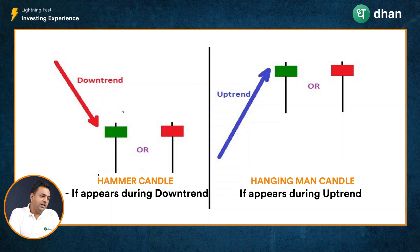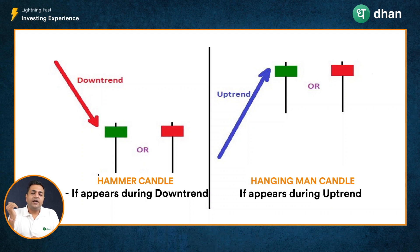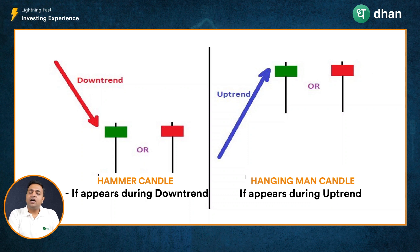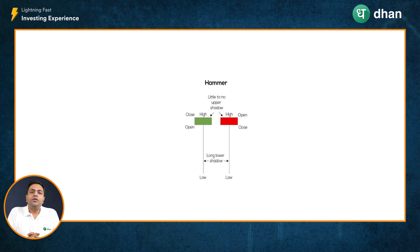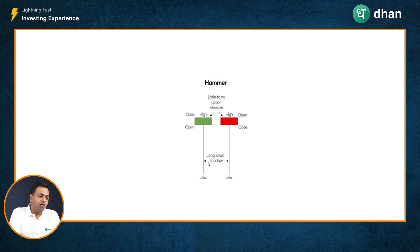However, if this particular candle appears during a downtrend, it signifies that the downtrend may temporarily pause and an uptrend may follow. Conversely, if this candle formation is spotted when the stock is in an uptrend, it may signify a temporary pause in the uptrend and the price movement may enter into a corrective phase or a downtrend. The hammer pattern is a candlestick with no upper shadow and a long lower shadow, and it has a very small body.